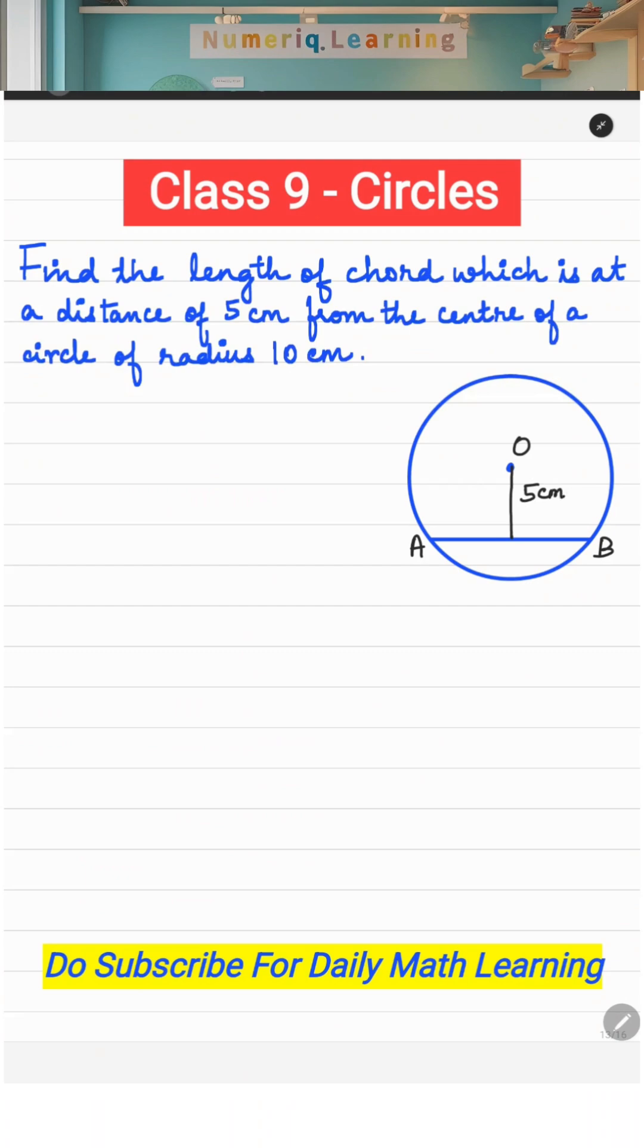So automatically, if you have the distance, it is nothing but your perpendicular distance. And if you have a perpendicular from the center to the chord, then it bisects the chord. That is the theorem.